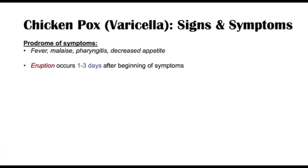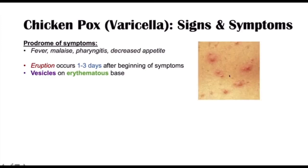The eruption of vesicles occurs one to three days after the beginning of these prodromal symptoms. The vesicles are described as being on an erythematous base, meaning there is redness on the skin with a vesicle on top. The key to chickenpox is that these vesicles are all in different stages of healing, as there are successive eruptions of groups of vesicles. Over time, some begin to heal while others continue to erupt, and we see different stages of healing.